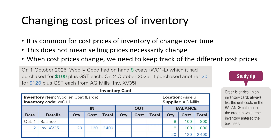When the cost prices change, we need to keep track of these different cost prices. This example has been taken from the Unit 3 and 4 textbook by Cambridge, and it shows us that we have two different cost prices of inventory.